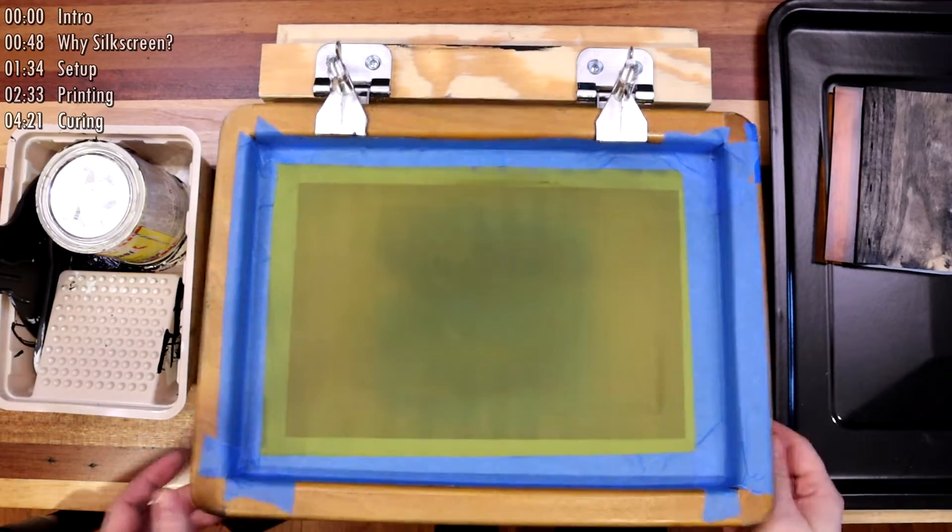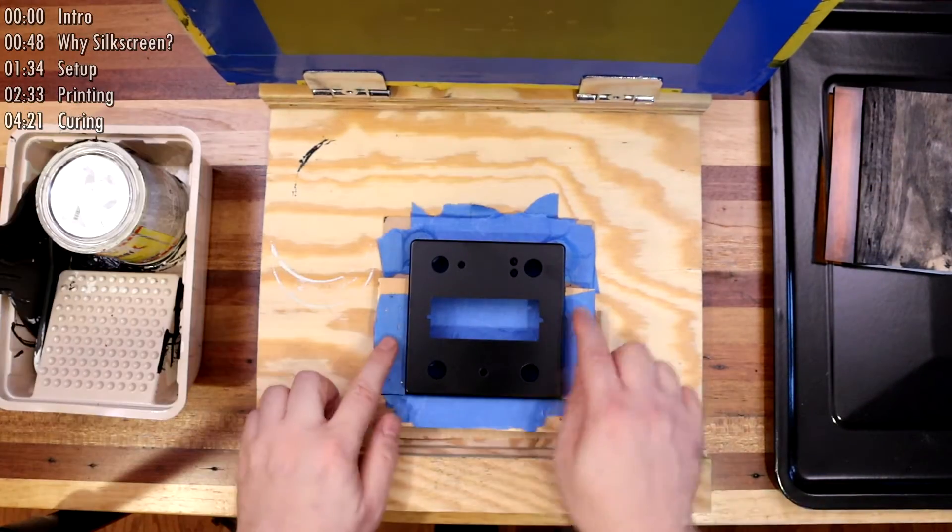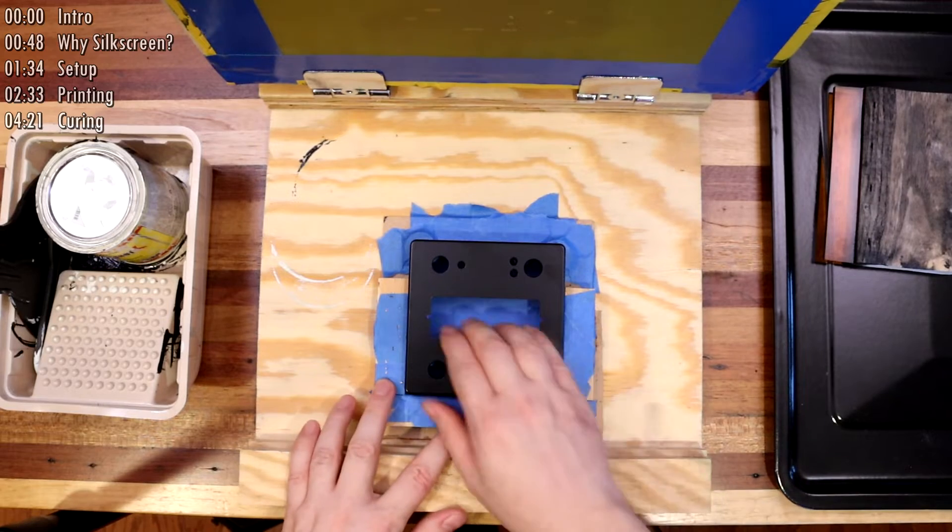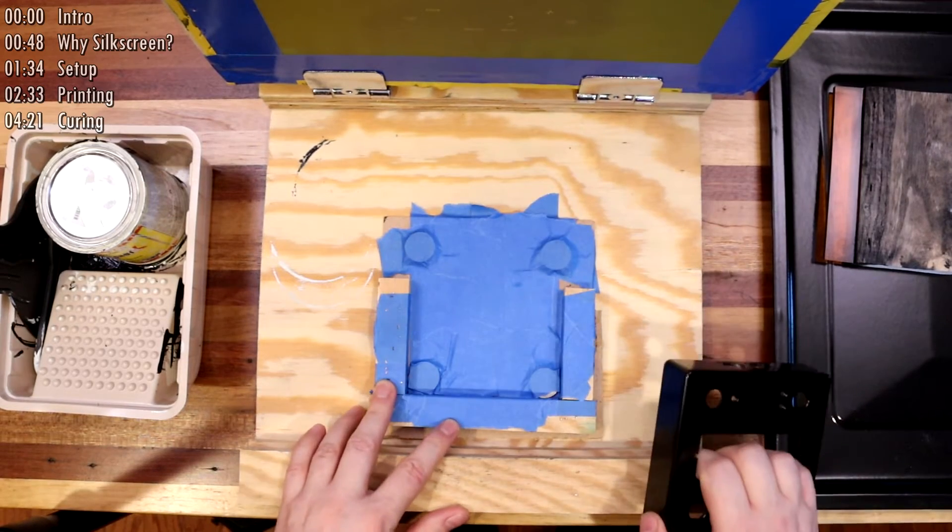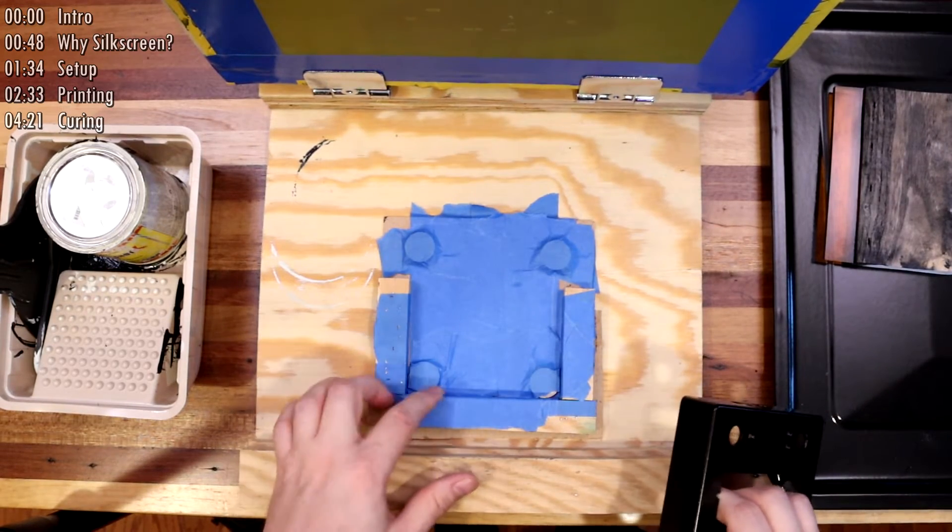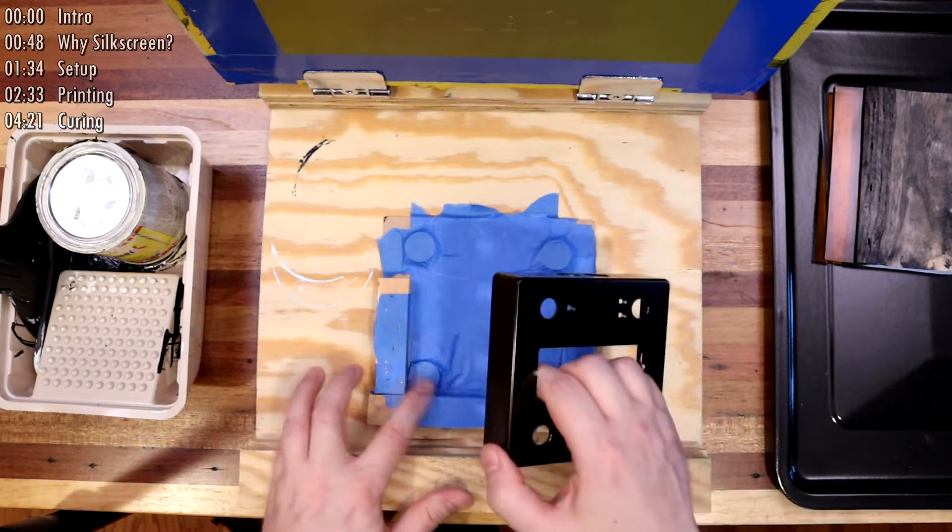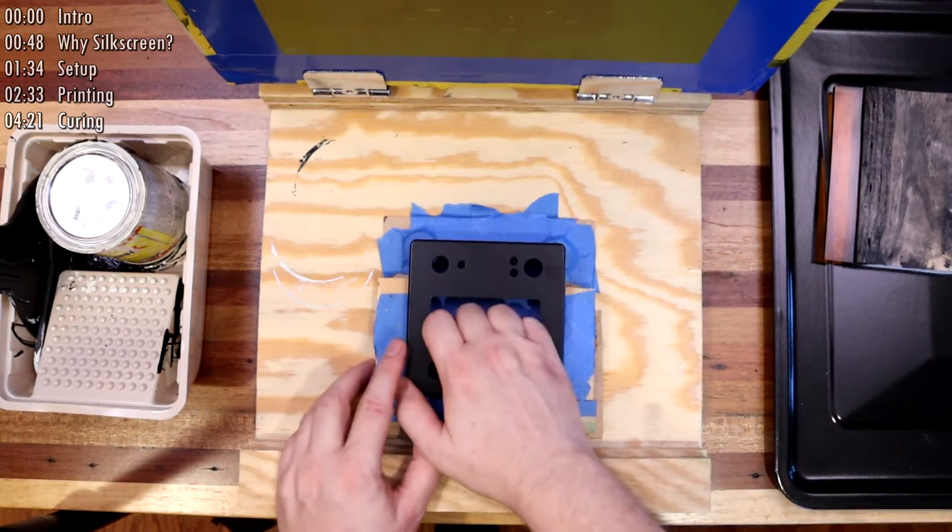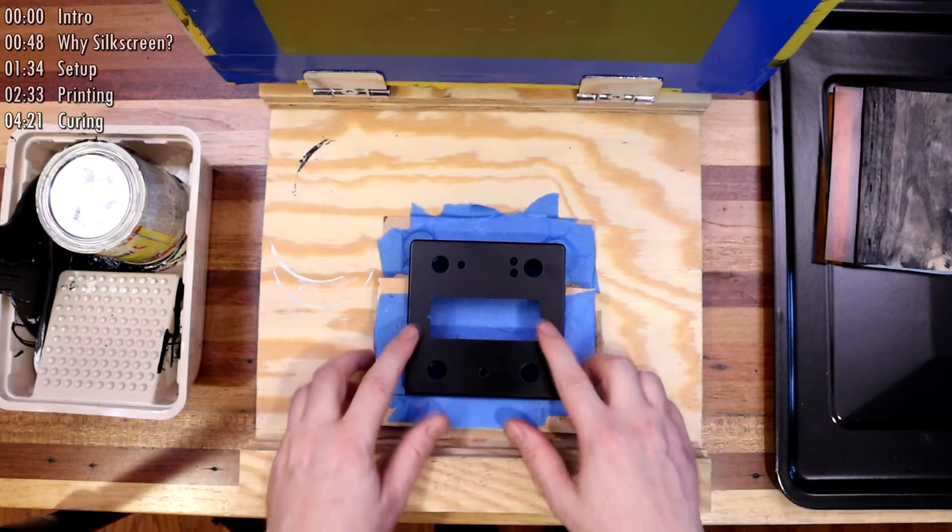Once in place, I'll air-nail a couple blocks of wood around the enclosure to create a cradle. I'll use some masking tape to protect the finish, which also tightens up the fit as well as allowing me to make minor alignment adjustments by just adding tape to one side or another as needed.